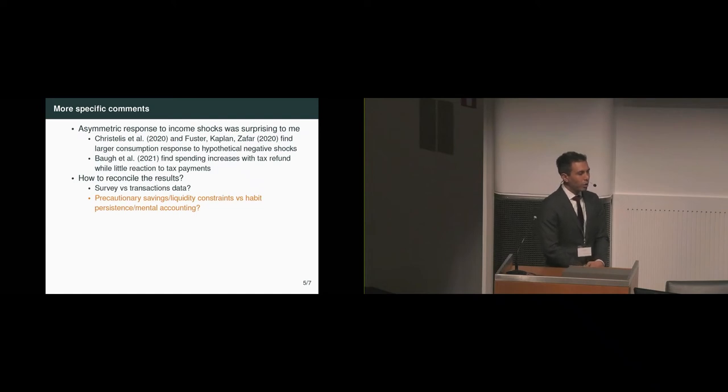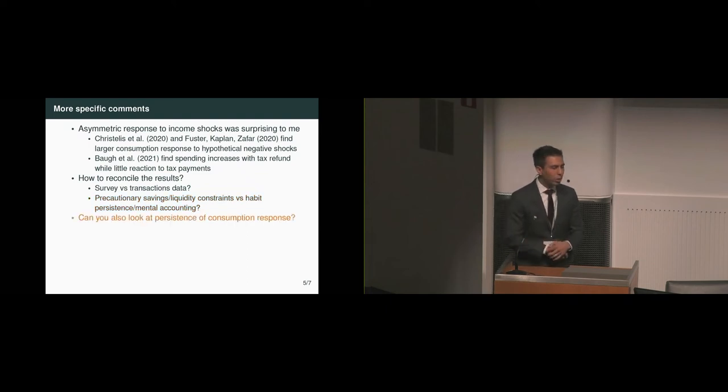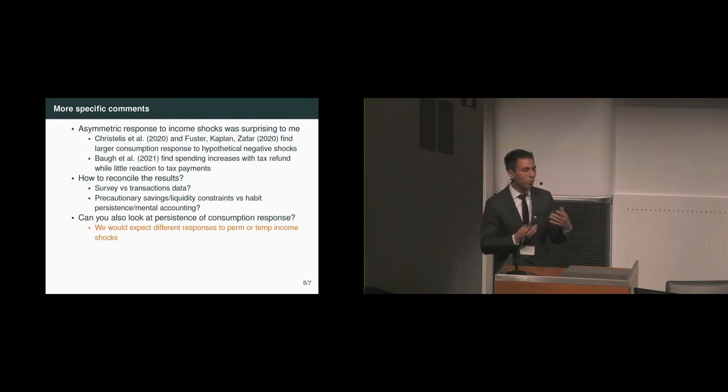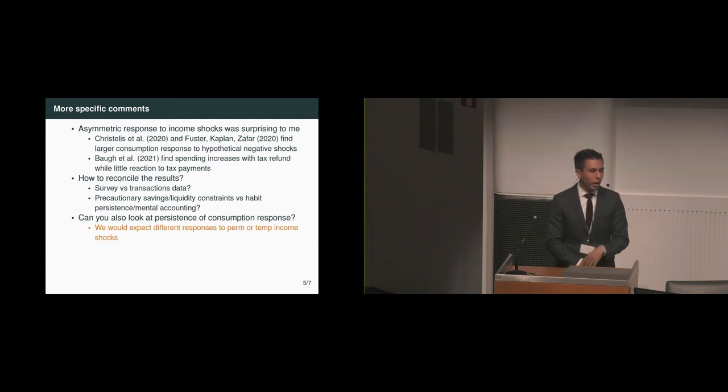I think it'd be interesting to discuss the different results in the literature and how this paper ties into that. Another suggestion is, can you also look at the persistence of consumption responses? The authors do a good job identifying temporary versus permanent income shocks. But you would imagine that the consumption response to those shocks would be very different. From a consumption standpoint, whether the consumption response is more temporary or permanent could be another way to check whether the taxonomy is working.